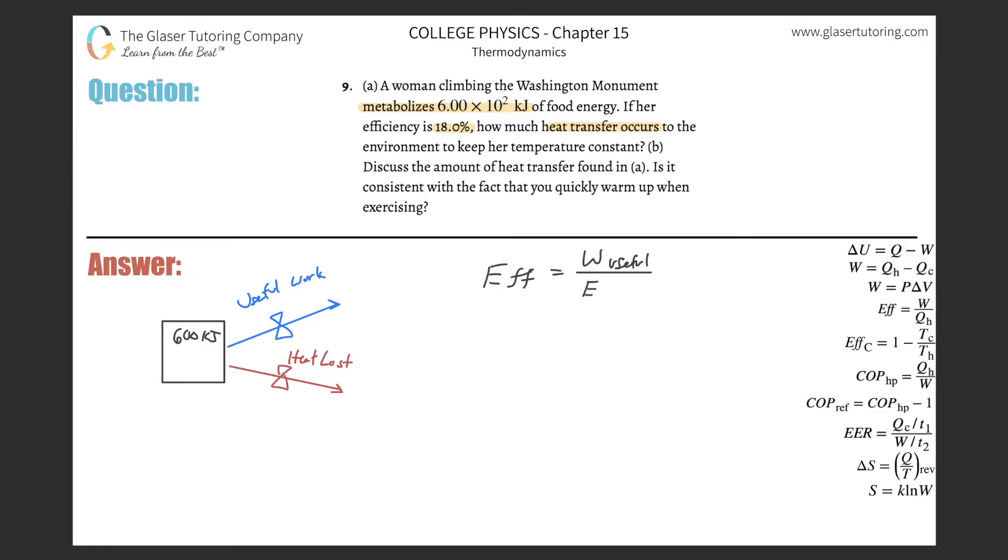This is the total energy of metabolism. We need to find how much heat gets transferred. First thing we want to do is find out how much useful work is being done. They tell us that she is metabolizing 600 kilojoules of food energy.